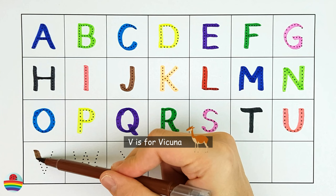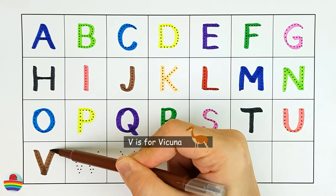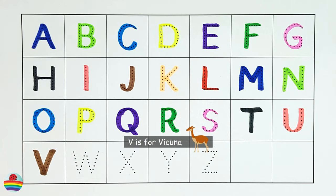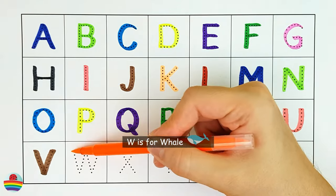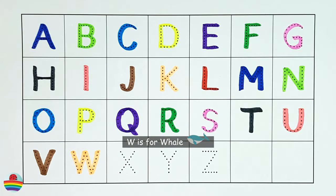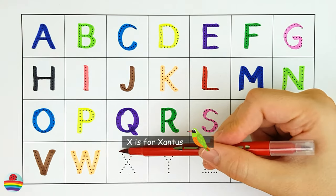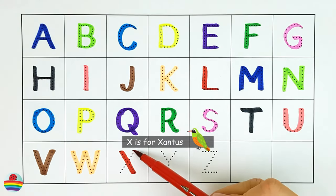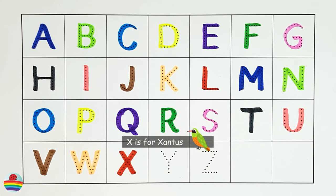V. V is for Vicuna. V. W. W is for Whale. W. X. X is for Xantus. X.